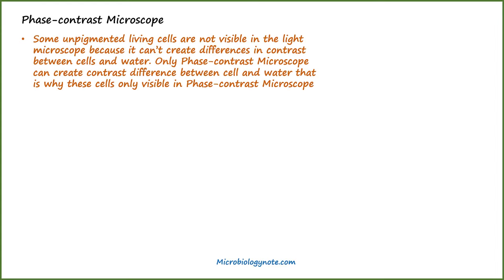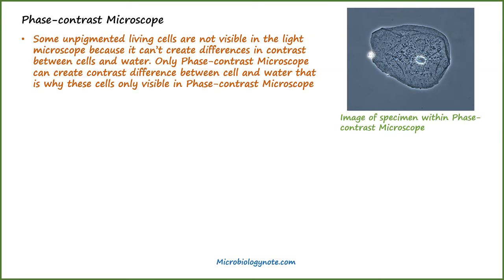The next type of light microscope is the phase contrast microscope. Some unpigmented living cells are not visible in the light microscope because it can't create differences in contrast between cells and water. Only the phase contrast microscope can create a contrast difference between cell and water, which is why these cells are only visible in the phase contrast microscope. These types of microscopes are used for studying the shape and motility of microorganisms.